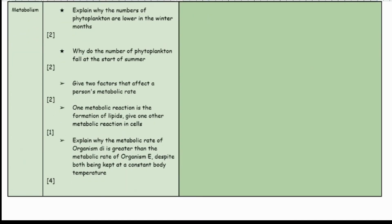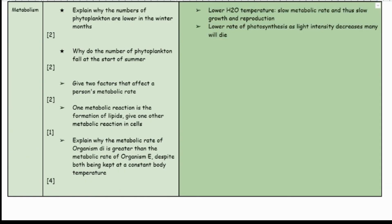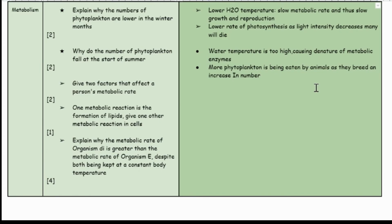Let's move on to the final subtopic: metabolism. Explain why the numbers of phytoplankton are lower in winter months. Phytoplankton is an example of an organism that lives in water. Because there are lower water temperatures, there is a slow metabolic rate, meaning a slow rate of growth and reproduction. Also, because there is a low rate of photosynthesis in winter, many will die. Phytoplankton numbers fall at the start of summer because water temperatures begin to get too high, causing the denature of the metabolic enzymes.